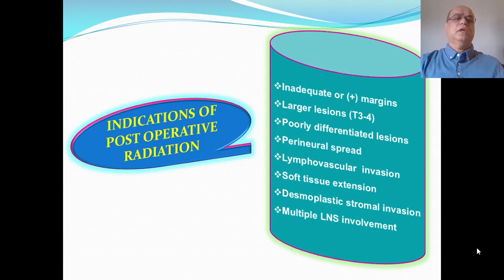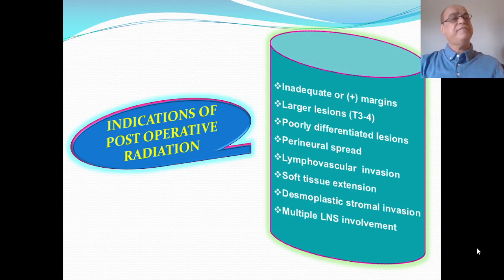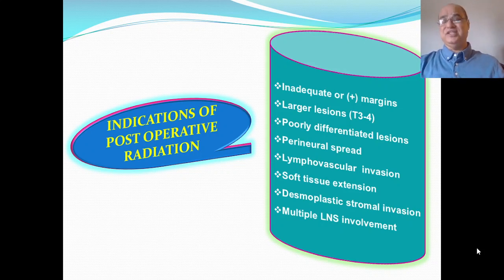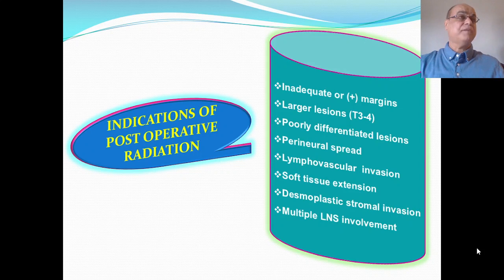When considering post-operative radiation: if on histopathology the specimen shows inadequate or positive margins, that is an indication for post-op radiation. Advanced stage T3 or T4 tumors that have been excised may still have microscopic involvement of surrounding tissues. Post-op radiation should also be considered for poorly differentiated lesions, perineural spread, lymphovascular invasion, soft tissue extension, desmoplastic stromal invasion, and multiple lymph node involvement.